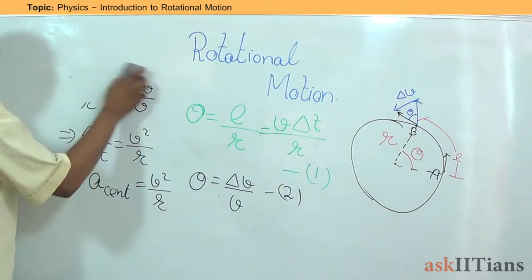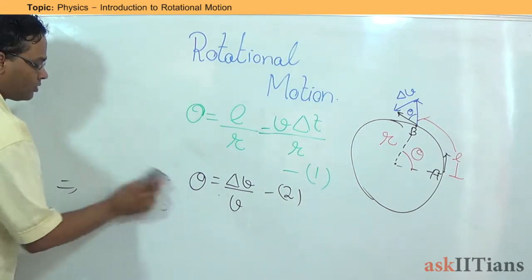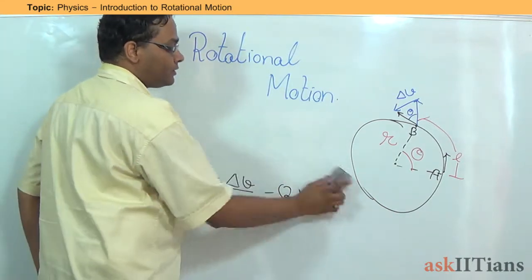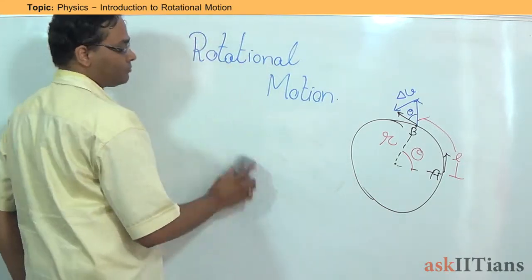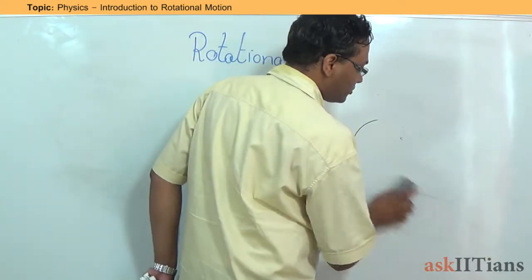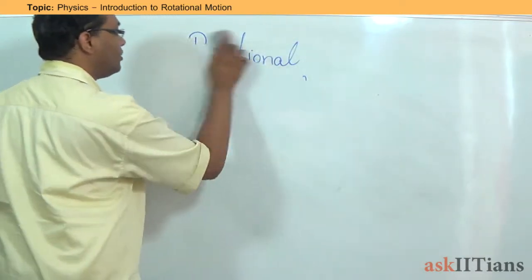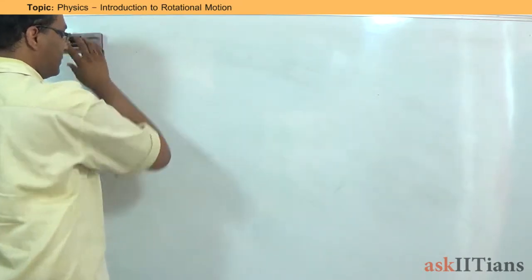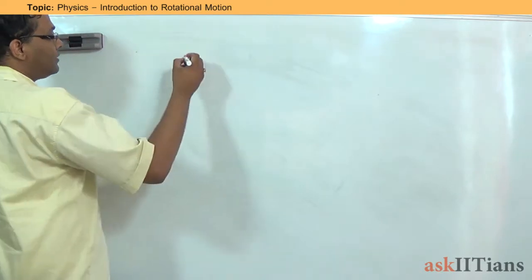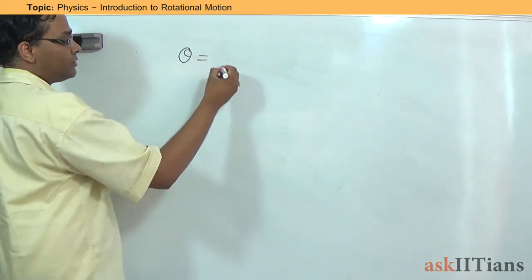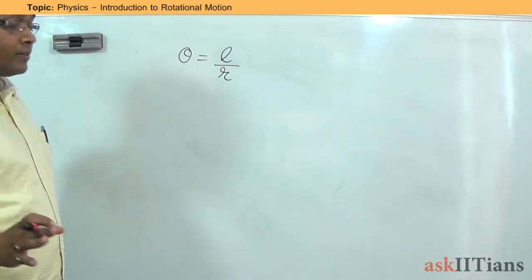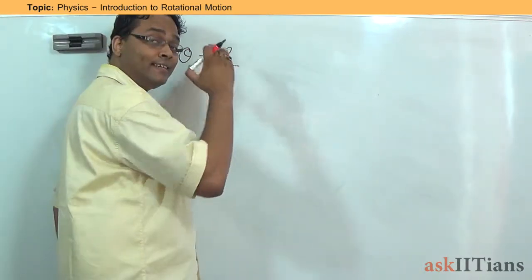Now let's take this further. We have understood about the centripetal force. We have understood about the angular motion — the basic part of it. We know that theta equals L by R. Just not to get confused, L is the linear displacement. So if I write it as s, let's replace L by s. I will get s equals r times theta.